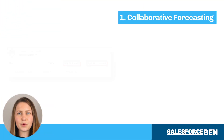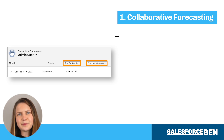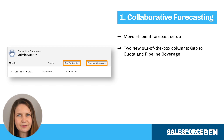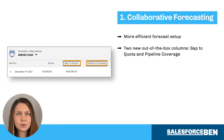If your organization forecasts using Salesforce, there are enhancements you can take advantage of. Aside from a more efficient forecast setup, two new out-of-the-box columns — gap to quota and pipeline coverage — reveal core forecasting KPIs, such as how close you are to achieving your quarter.